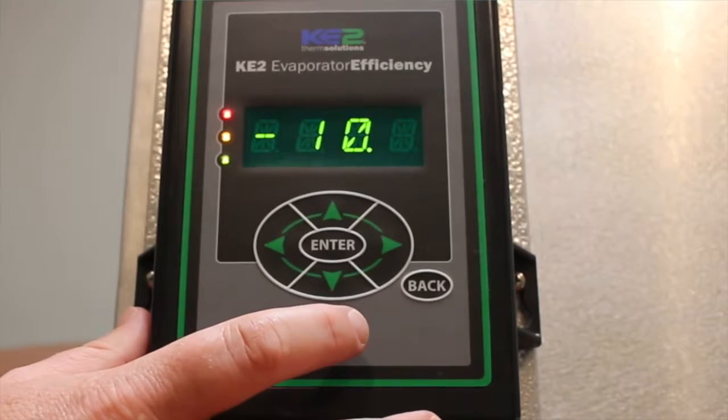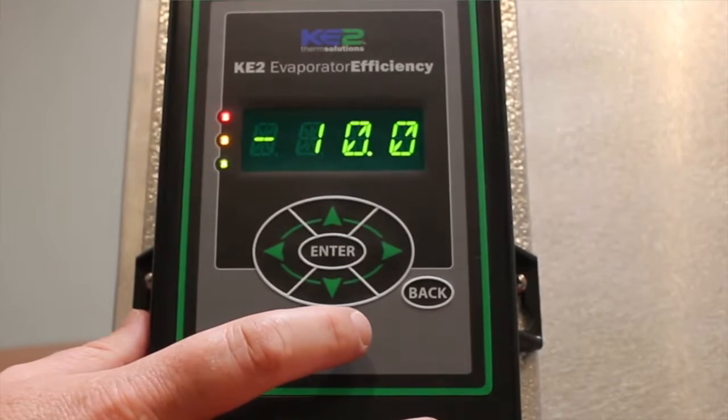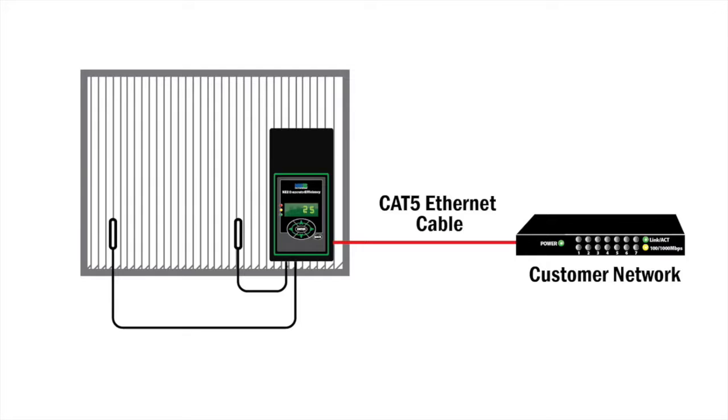Have the Key2 Evap completely wired. It also needs to be connected to the network router with a Cat5 cable.